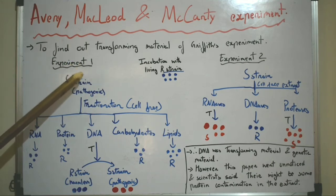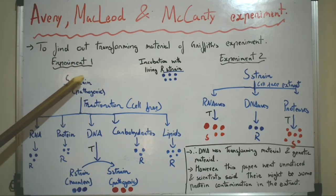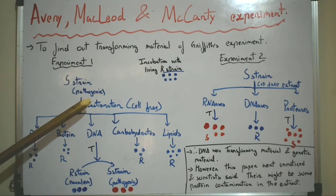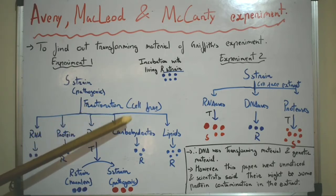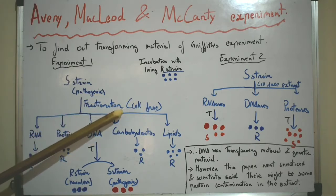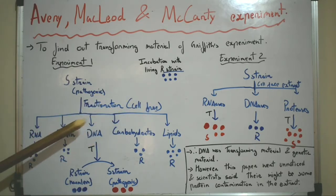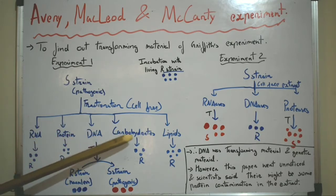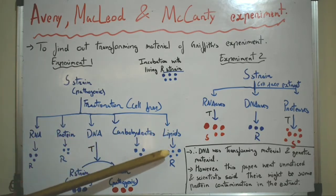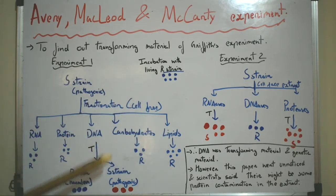In the first experiment, what they did was they took the pathogenic S-strain, made a cell-free extract, and then did the fractionation and isolation of its constituents. So they isolated RNA, protein, DNA, carbohydrates, and lipids from this cell-free extract.